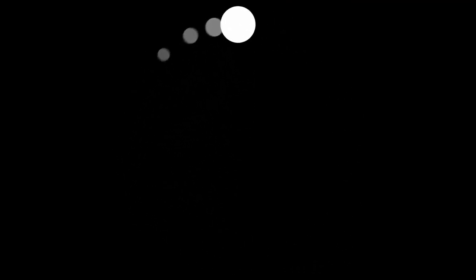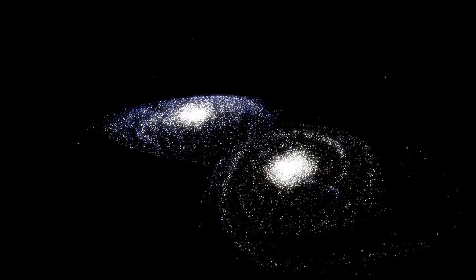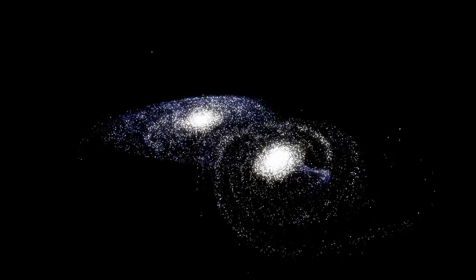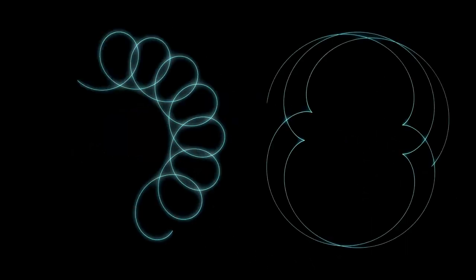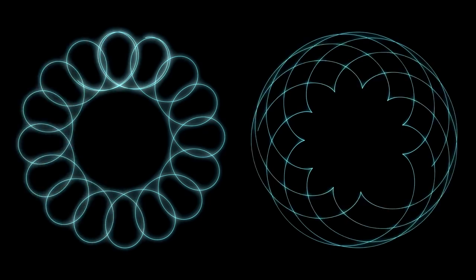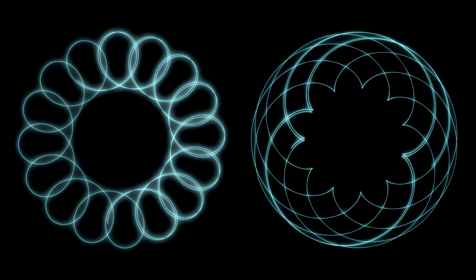When astronomers studied the spectral fingerprints of these galaxies, the light that reveals which elements they contain, they were hit with an even greater shock. These galaxies weren't just there. They contained oxygen, carbon, even iron, heavy elements that shouldn't have existed yet because these don't appear out of nowhere. They're forged in the hearts of massive stars and released only after supernova explosions.